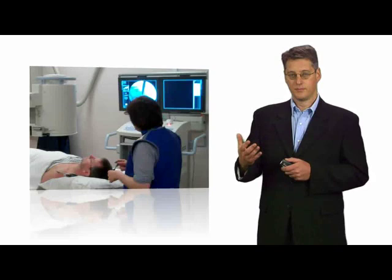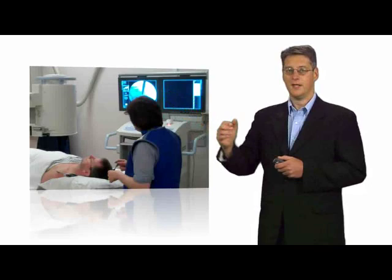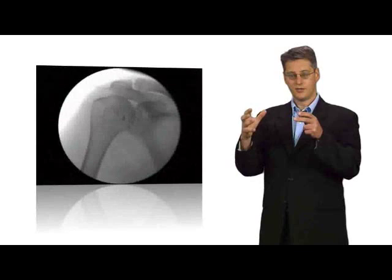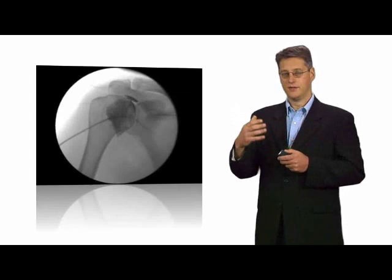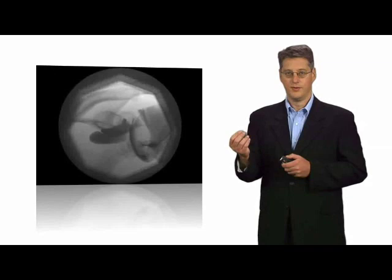If this isn't working, a procedure known as arthrographic hydrodilatation can be performed. This is generally done under x-ray control, as you can see over here, and where dye is inserted into the shoulder joint and the joint is gradually expanded a little bit, hopefully to try and stretch out that capsule. And then a steroid can be injected directly into the place it needs to be within the shoulder joint. We've had very good results and very high success rates with this procedure.